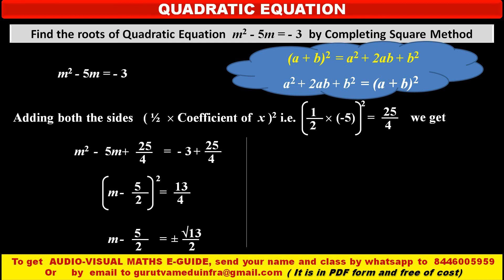By taking square root on both the sides, we get m minus 5 upon 2 is equal to, in the right hand side, we have to use plus or minus both the sides because we are taking square root. So maybe possibility of positive or negative. So plus minus root 13 upon 2.